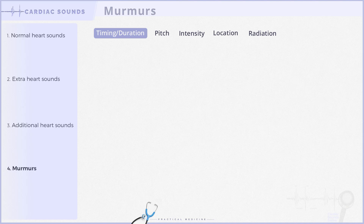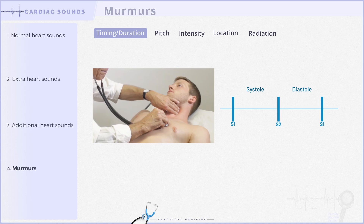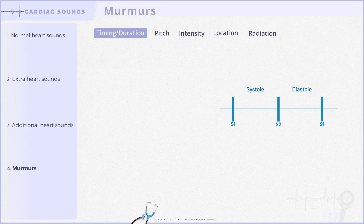Now let's start with the timing and duration of murmurs. As part of the auscultation process, it's crucial to palpate the carotid artery while examining the precordium. This enables us to correlate various heart sounds with distinct phases of the cardiac cycle. By determining the precise timing of these sounds, we can classify murmurs as systolic, diastolic, or continuous — a classification that is instrumental in refining diagnoses.